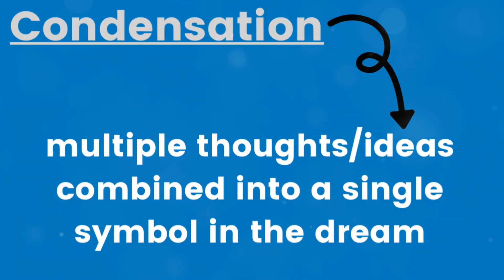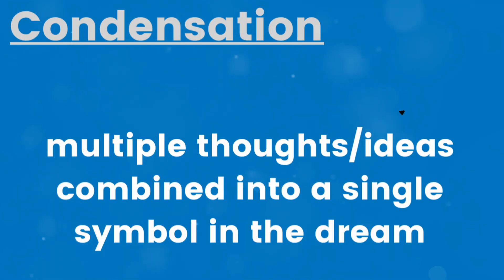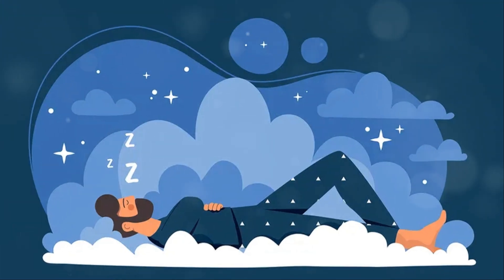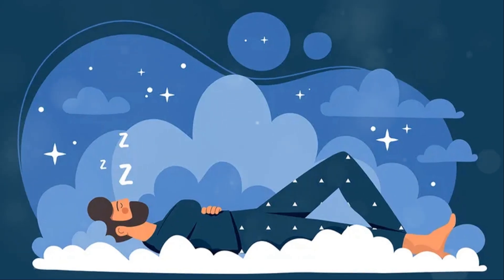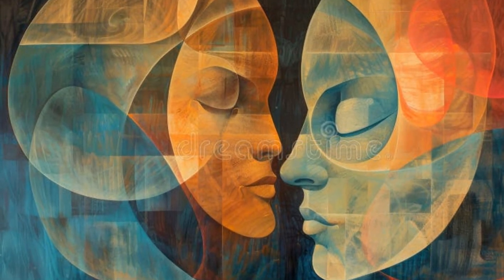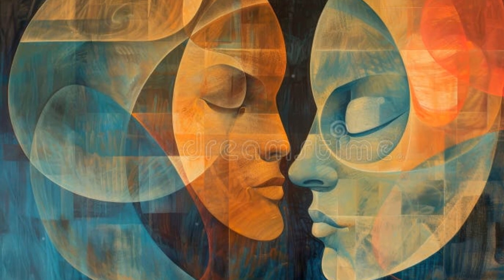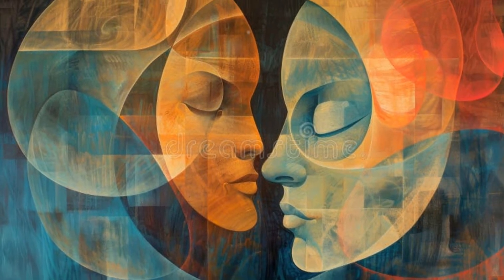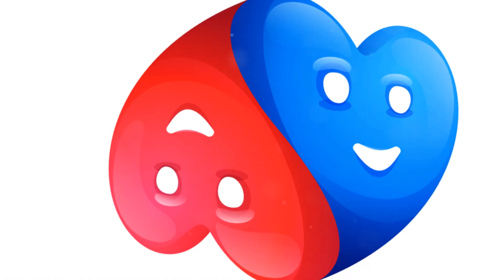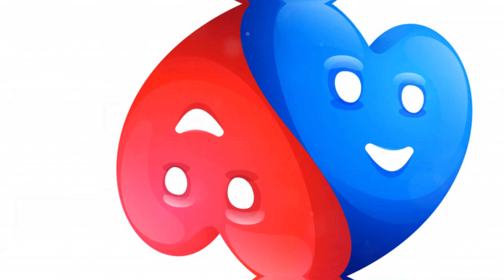Condensation. This is when multiple thoughts, ideas or people are combined into a single image or symbol in a dream. For instance, a dream might feature a person who looks like a blend of two important people in the dreamer's life, symbolising combined feelings or complex relationships with them.